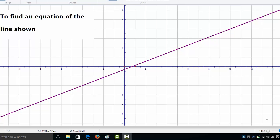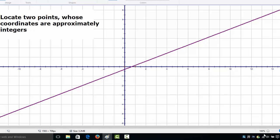So we would like to find an equation of the line that is shown. What we shall do first is locate two points whose coordinates are approximately integers.